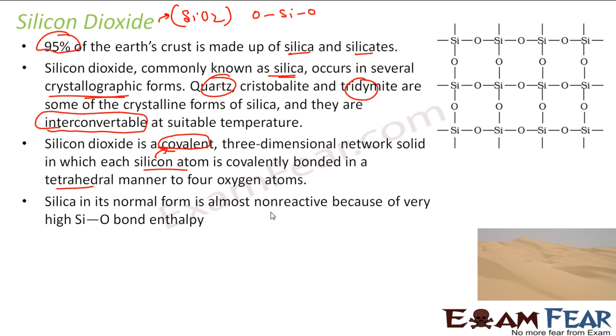In its normal form, it is almost unreactive. Why? Because the Si-O bond enthalpy is very high. Carbon monoxide should be basic but is neutral because the carbon-oxygen bond is strong. Here also, the bond is very strong. All the silicon atoms are tied up in this network, and the bond energy is very high, so it is almost unreactive. That is why sand is very, very unreactive.